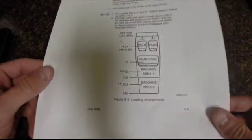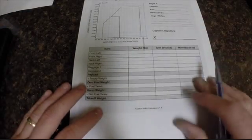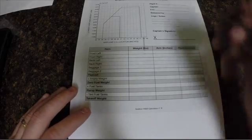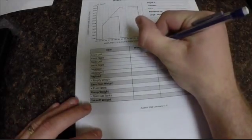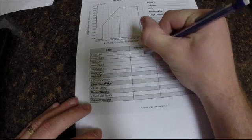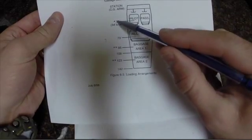So we'll start with doing the weights. For this flight we'll say that it'll be myself and a passenger and we'll say we both weigh about 210 pounds. And if you go back to this, this shows you that both the passenger and the pilot are at an arm of 37.